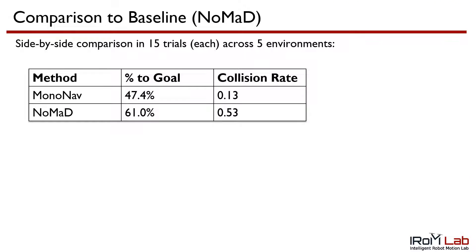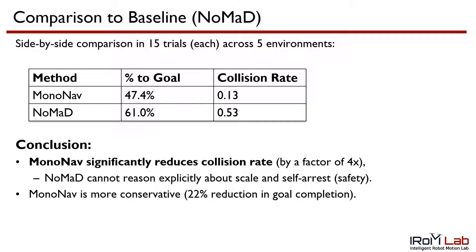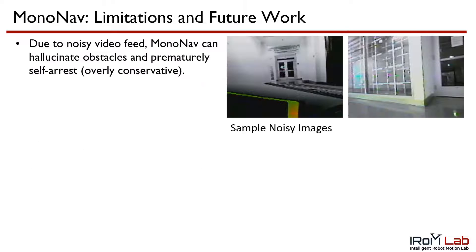We compare MonoNav and NOMAD side-by-side in 15 trials and find that MonoNav significantly reduces the collision rate by a factor of 4. However, this improvement in safety comes at the cost of a 22% reduction in goal completion. There are several limitations to MonoNav that merit future work. Due to noise in the image feed, MonoNav can hallucinate obstacles and prematurely self-arrest, which is overly conservative.